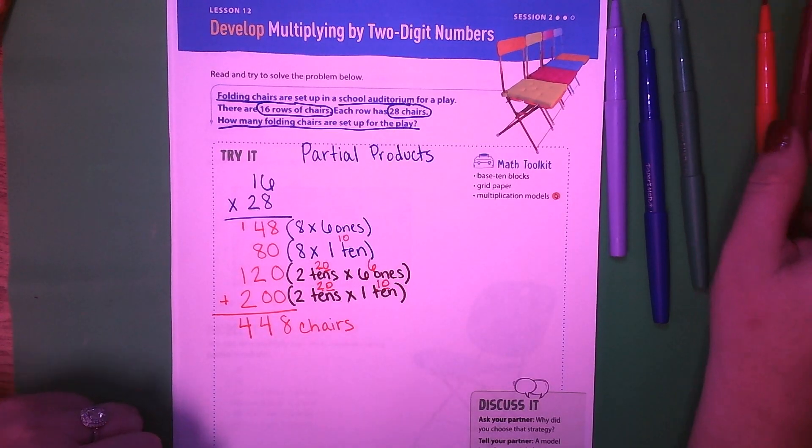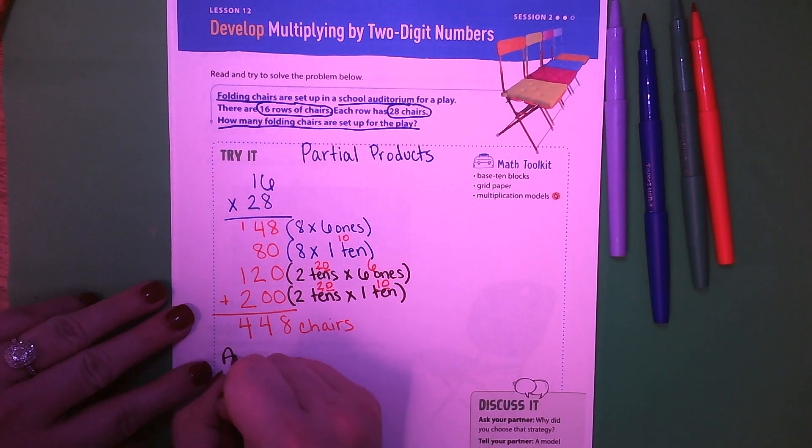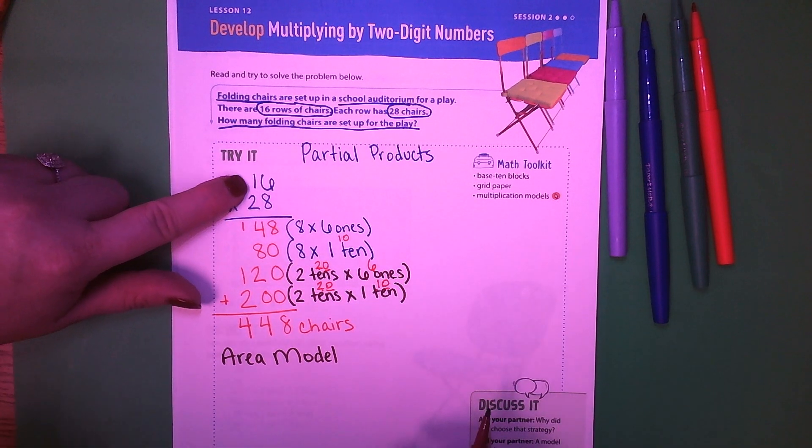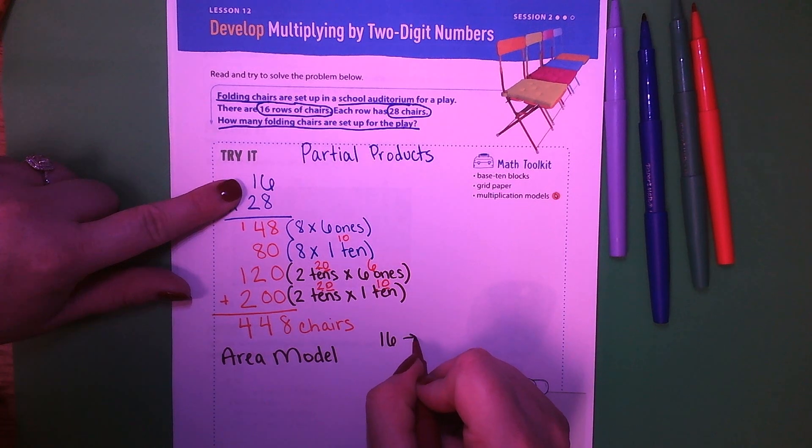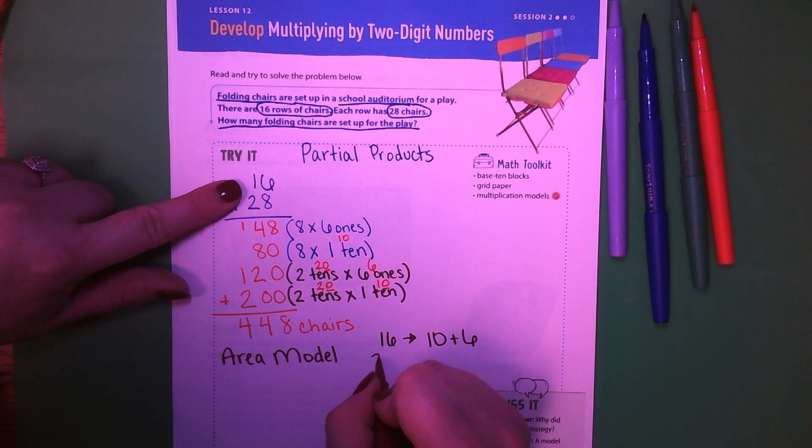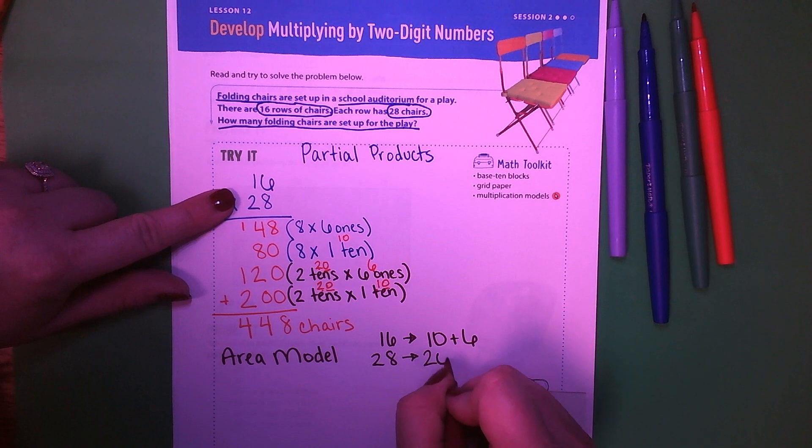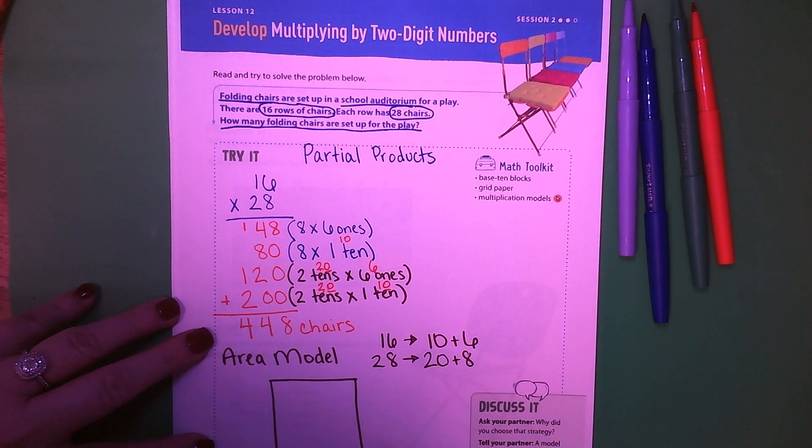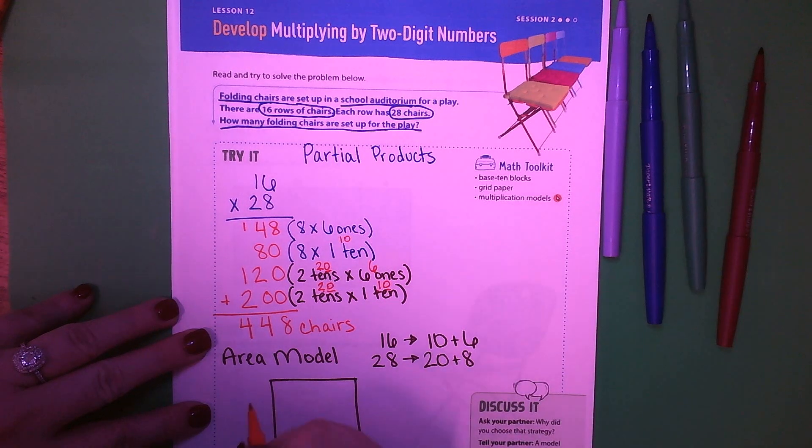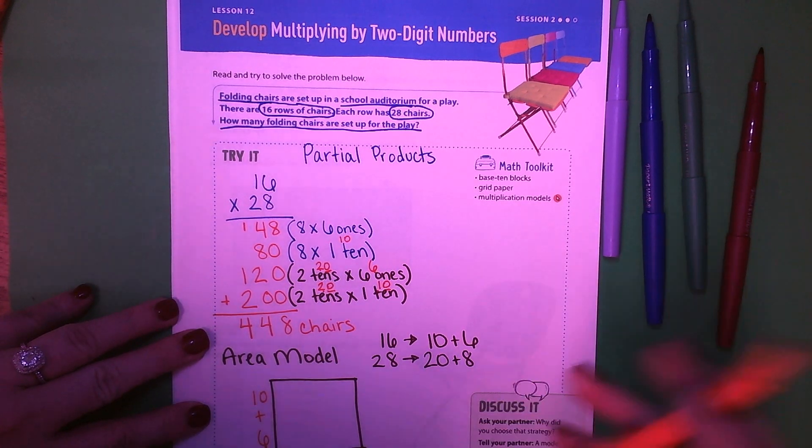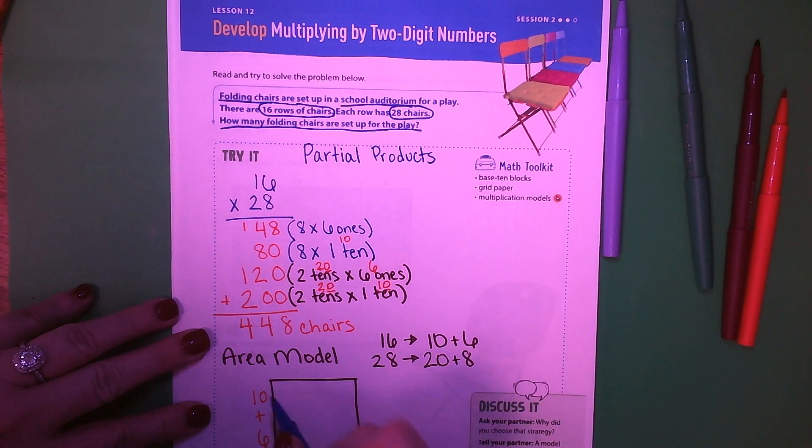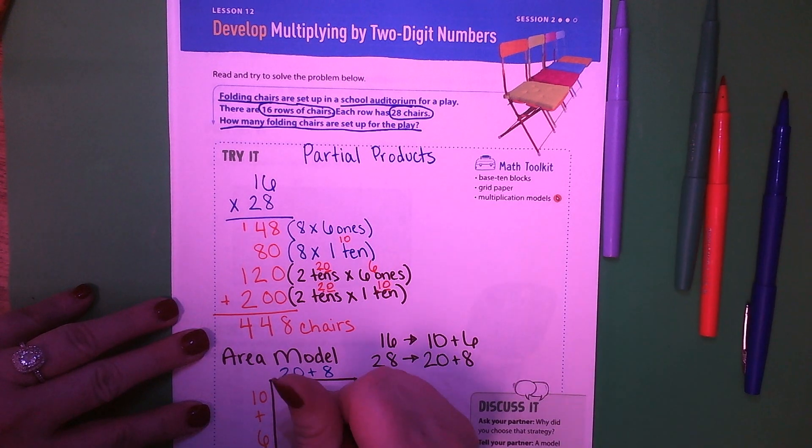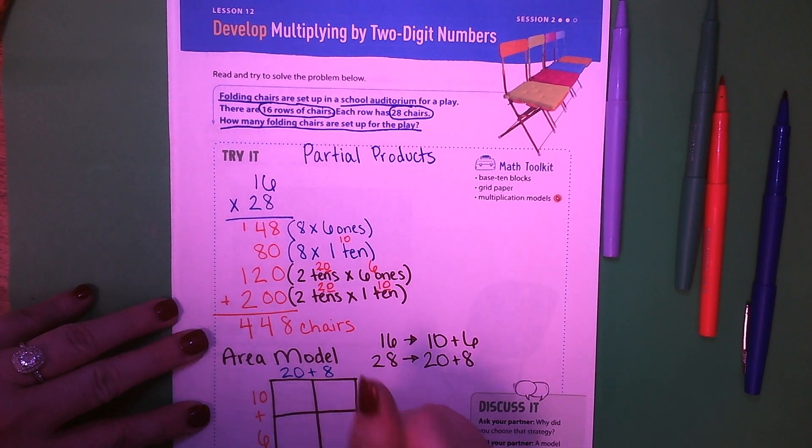Now we are going to solve it using the area model. So my area model down here. The first thing I need to do is I need to put 16 and 28 in expanded form. So it'd be 10 plus 6, 20 plus 8. I'm going to put one of them over here on this side, 10 plus 6. I'm going to put the other one at the top, 20 plus 8. Any place where there's a plus sign, I'm going to draw a line through the box like that. And now I'm ready to solve.